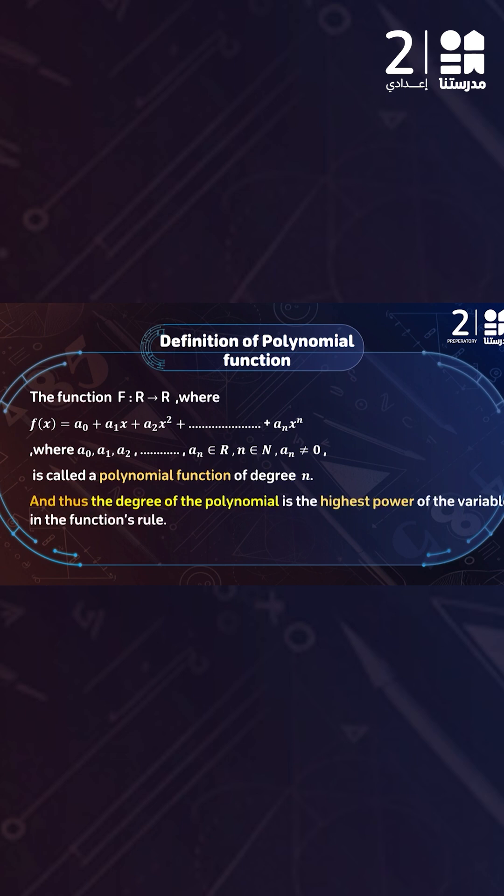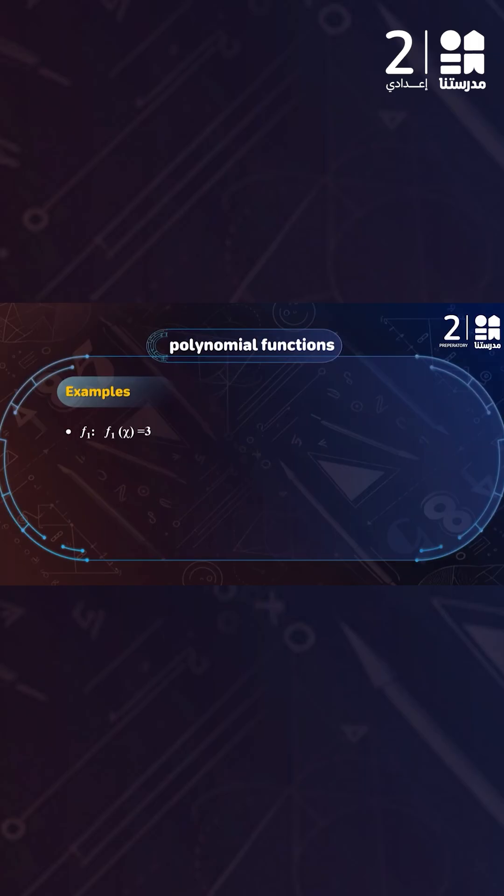The degree of a polynomial function is the highest power of the variable in its rule. For example, f(x) = 3 is a polynomial function — here we have x to the power 0, so it is a polynomial function of degree 0. The second example is also a polynomial function when the domain and co-domain are the set of real numbers.